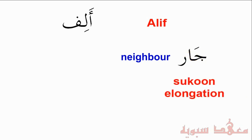A thing to note about the Alif is that the vowel on top of it is a Sukun, although it's not written. You can think of the Alif as a long vowel. And a point to note about this is that you'll never find the Alif at the beginning of a word. The reason why is because in Arabic, you can't start a word with a letter that has a Sukun, and we said that an Alif will always have a Sukun.